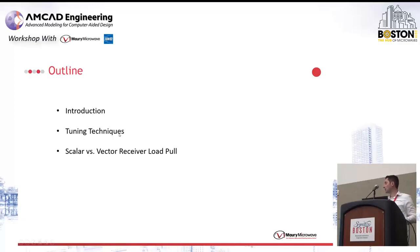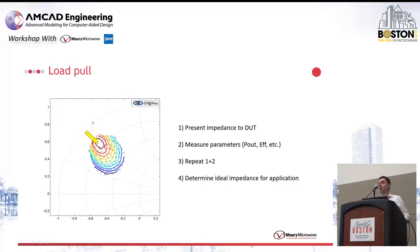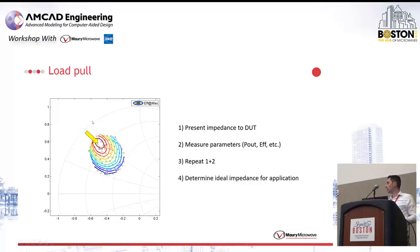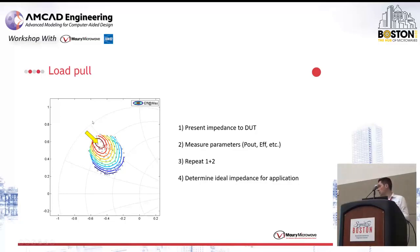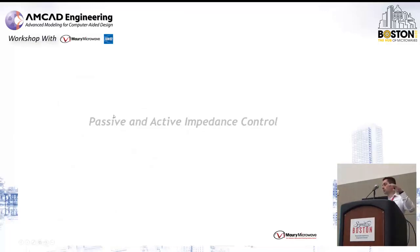I'll cover a small introduction, tuning techniques, and discuss the differences between scalar and vector receiver load pull. For those not familiar with load pull: in very simple terms, it's about changing your impedance to the device under test and measuring parameters such as efficiency, power, and so on, hopefully in an automated way. In some cases it's about determining the best impedance for your application; in other cases it's about making the device operate under non-linear conditions and validating your model against actual large signal measurements.